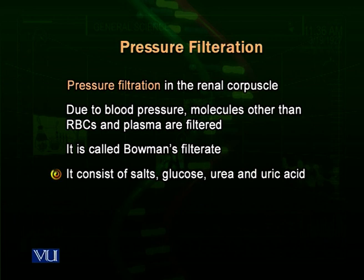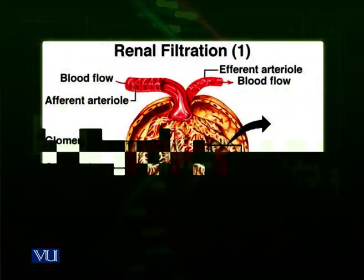Glucose, amino acids, salts, and water come out of the blood vessels and enter inside the Bowman's capsule, making the Bowman's filtrate. So pressure filtration is the first step in urine formation. Blood is filtered under high blood pressure — not high blood pressure in the disease sense, but the pressure of blood is high here in the renal capsule, and things are filtered and enter inside the corpuscle.